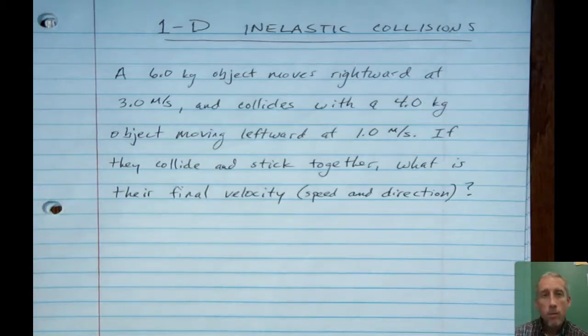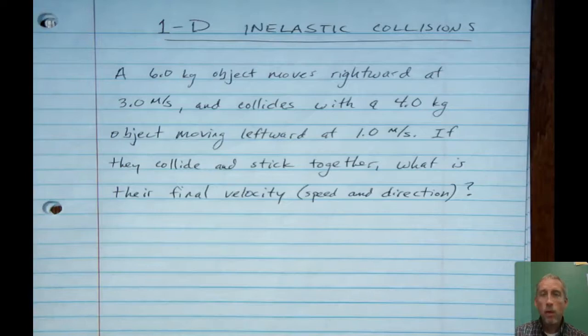And this particular example will be inelastic. In the language of collisions, the inelastic ones are ones where the objects stick together after the collision, and elastic ones are ones where they bounce apart and separate. What I like about inelastic ones is that if you're asked a question like what is the final speed, you only have to find one value because they must share a common speed if they're stuck together.